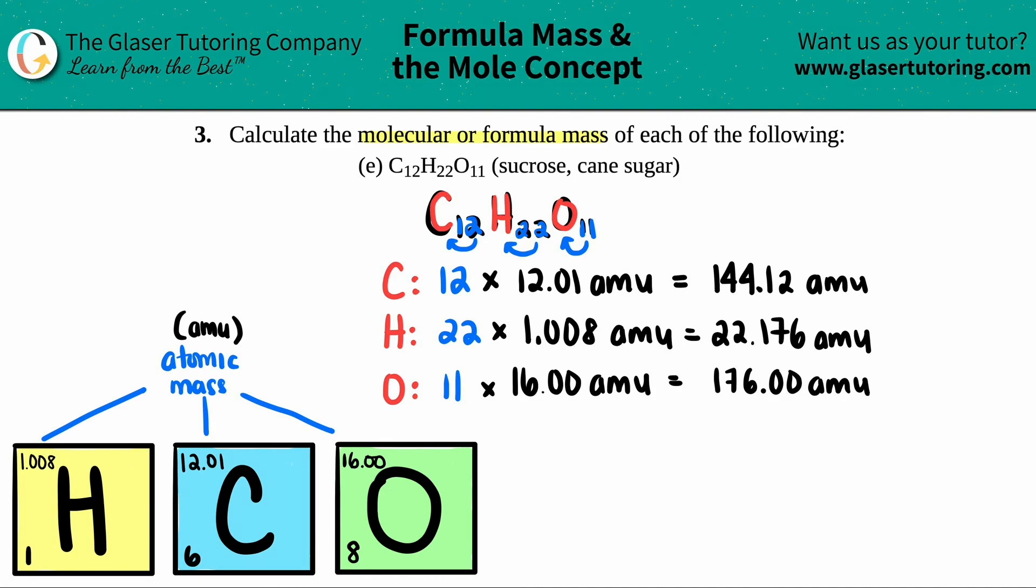So these are the individual amounts of each element. So there's a total of 144.12 AMU of carbon, and then the same for the other elements. But in this case, they wanted us to find the molecular or formula mass of the whole compound. So what do you think we have to do with these numbers? Yeah, we got to add them up. And that would be the answer. So 144.12 plus 22.176 plus 176. So I get a total of 342.296. And that's in AMU.